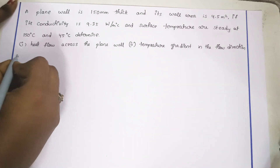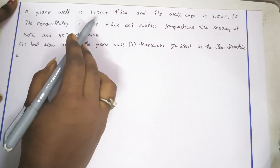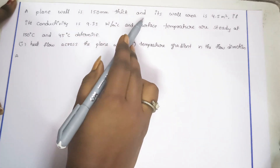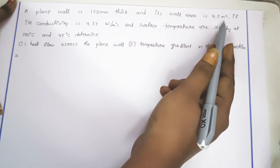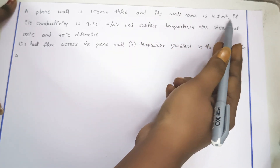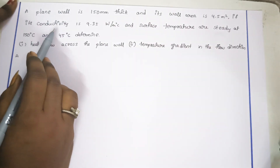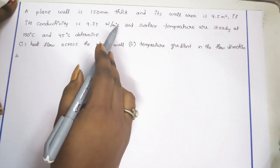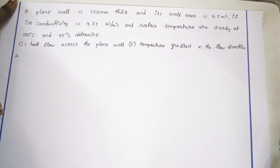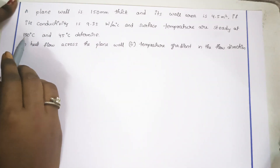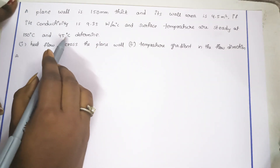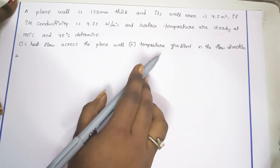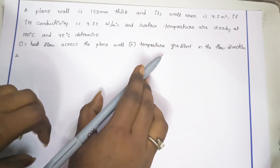Given data: this plane wall is 150 mm thickness, and its wall area is 4.5 m². Thermal conductivity K is 9.35 Watt per m degree centigrade, and surface temperatures are 150 degrees centigrade and 45 degrees centigrade. We need to determine the heat flow across the plane wall and the temperature gradient in the flow direction.